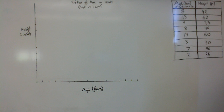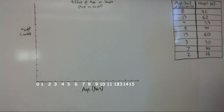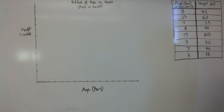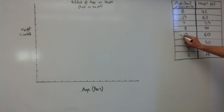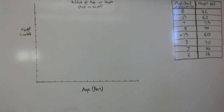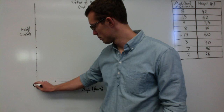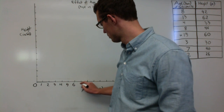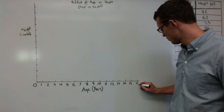Next we need to number our axes. The first number should always be zero. Your next question is: what should you count by — ones, twos, threes, or some larger number? Since we're looking at the age axis, find the largest age in our data table — in this case, it's 15. You'll need to count up by a number that reaches at least 15. Counting by ones gives you enough space to reach 15 and even go a little beyond.